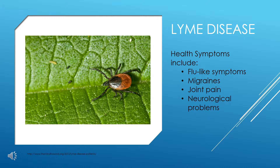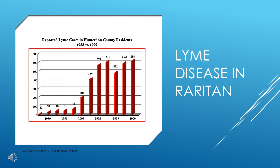Some of the health effects include flu-like symptoms, migraines, joint pain, and in extreme cases, it can lead to neurological problems which could result in paralysis. Reported cases of Lyme disease within the United States are concentrated mainly within the northeastern coast. Essentially, the entire state of New Jersey has a high rate of this disease, and within one county contained in the Raritan watershed — Hunterdon — there has been a significant increase in the number of reported cases.